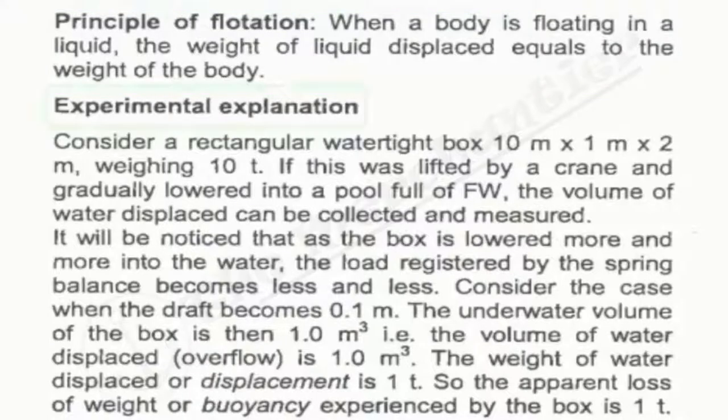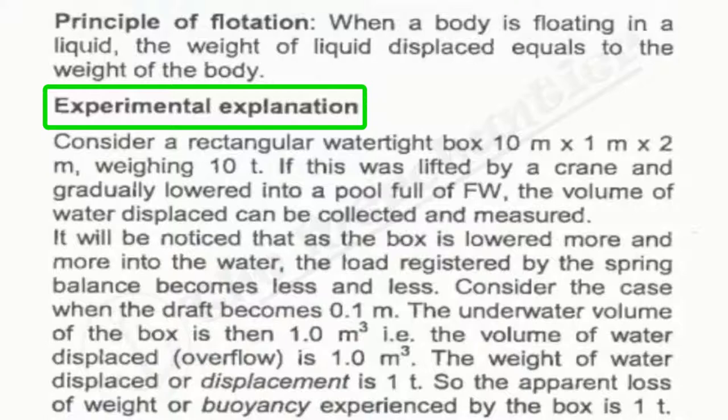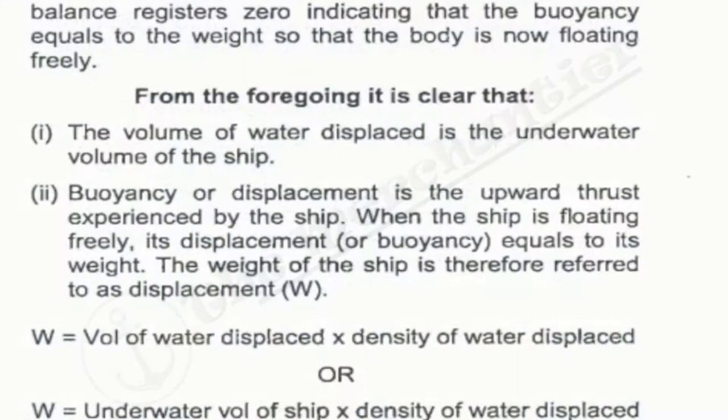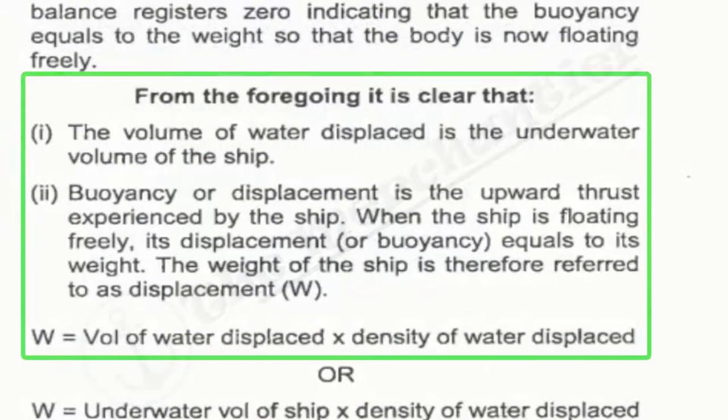So here is some experimental explanation. This explanation shows the weight of the spring balance is loaded and the weight of the liquid is reduced. But I am not going to explain it more because you can go through it easily. So after experimental explanation, the result is written here. The first one is the volume of water displaced is underwater volume of the ship. Means jo bhi vessel ka niche wala part hoga, jo bhi underwater volume ka part hoga, utna hi volume of water displace hoga.